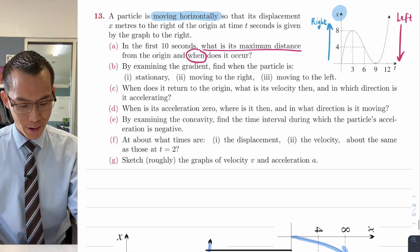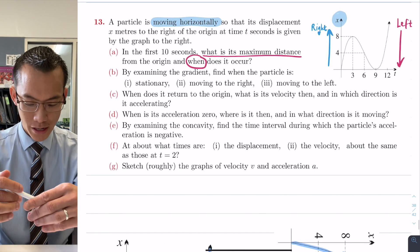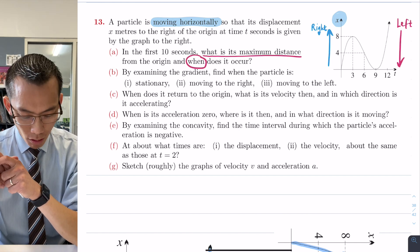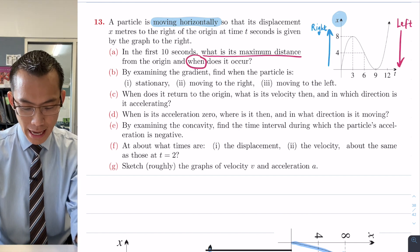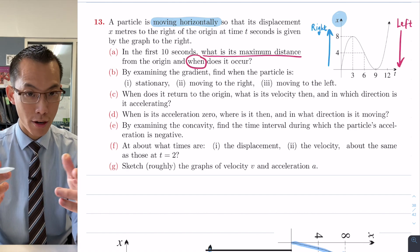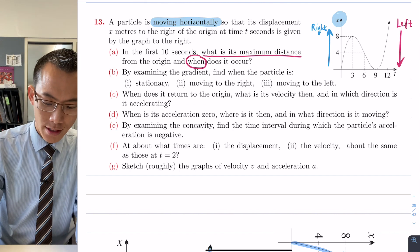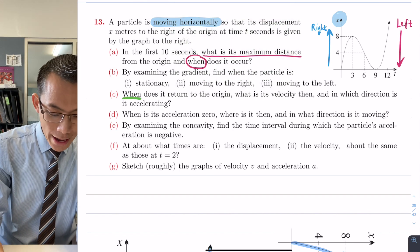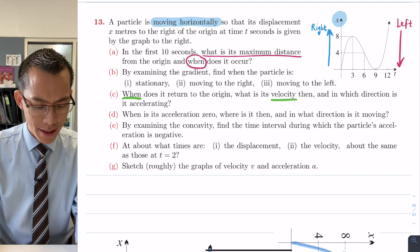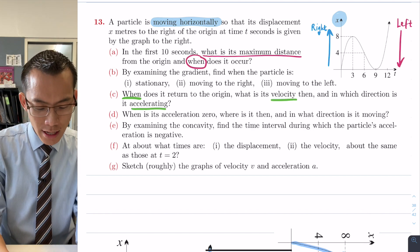We're ready to pick back up on where the question is taking us. So it says, we did part B just now, it says part C, when does it return to the origin, what is its velocity then, and in which direction is it accelerating? So this is kind of like a triple-barreled question. The first thing they're asking is when does it return to the origin, what is its velocity at that point, and then in which direction is it accelerating?